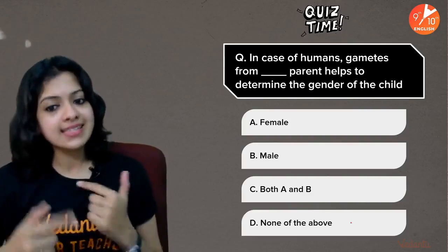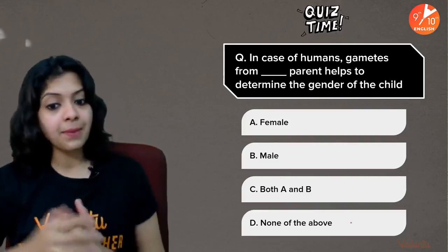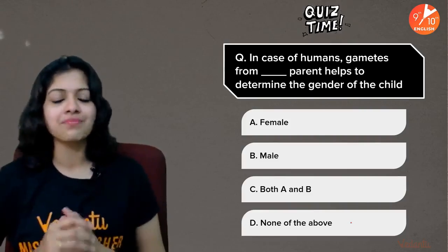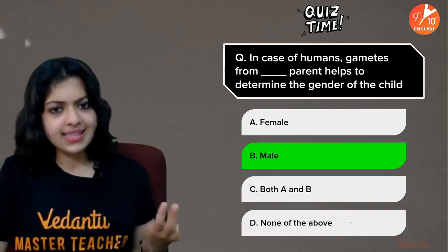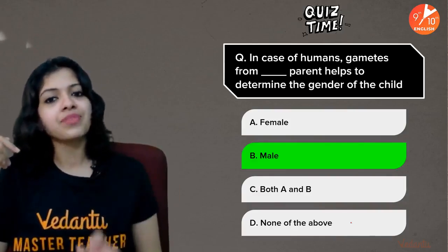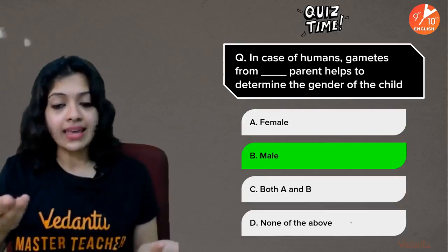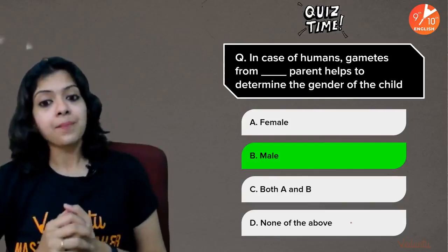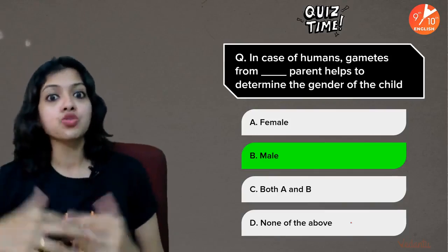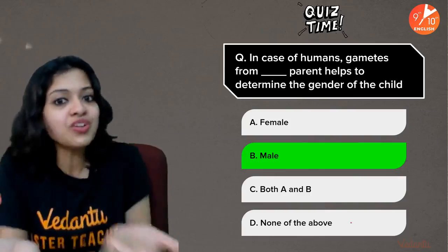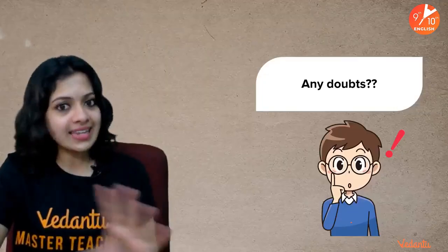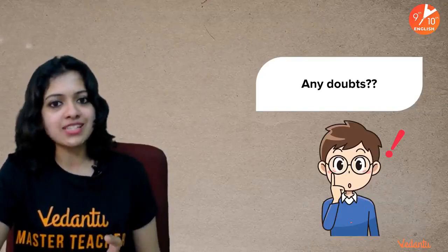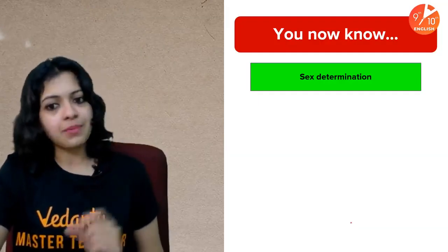Question 4: In the case of humans, gametes from which parent determines the gender of the child — female parent, male parent, both, or none? The answer is the male parent. In many uneducated parts of the country, females are often blamed for not giving birth to a male baby, but scientifically it is the male who decides whether it's going to be a male or a female baby.